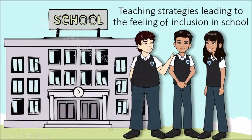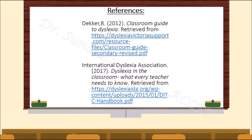As Ishan's teachers use all these teaching strategies, he has been able to adjust to the learning environment and also make friends with his schoolmates. So the role of the teacher in making students like Ishan develop a feeling of inclusion is of utmost importance. This was about dyslexia. You can check out the references for detailed information on dyslexia, including some very useful classroom activities. You will find the links to these websites in the description box under the video.